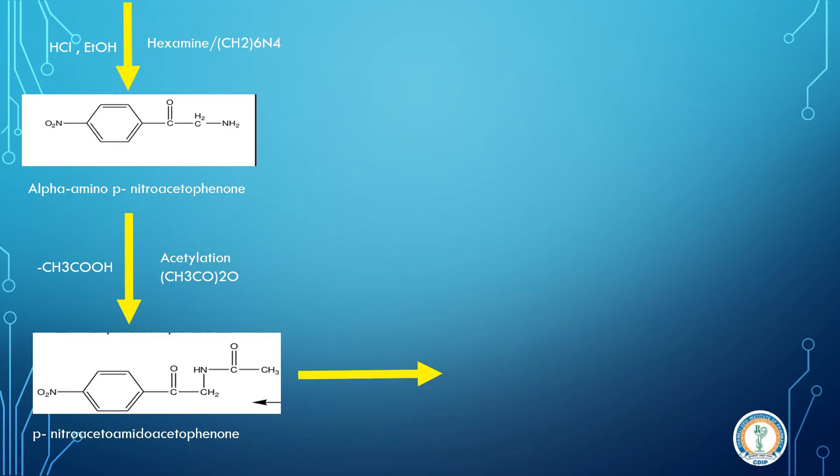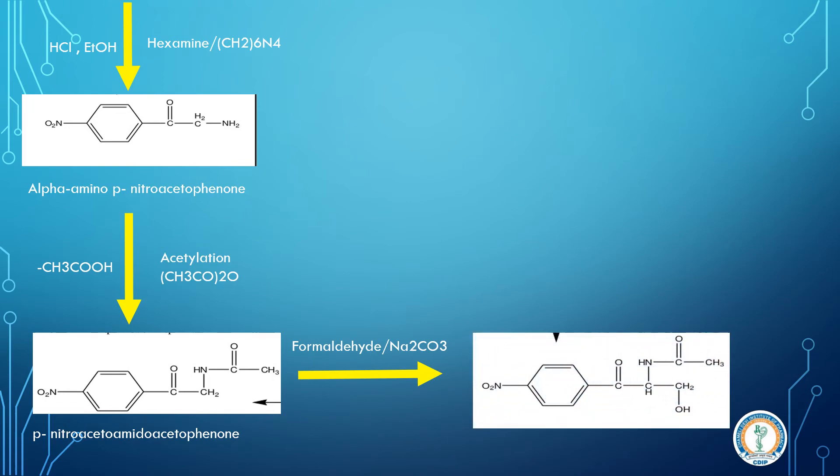Now moving further, we have to do the reaction with formaldehyde. Formaldehyde is HCHO. Now NHCOCH3 will remain, but for the CH2, the hydrogen will be replaced. We have to add the alcohol molecule.